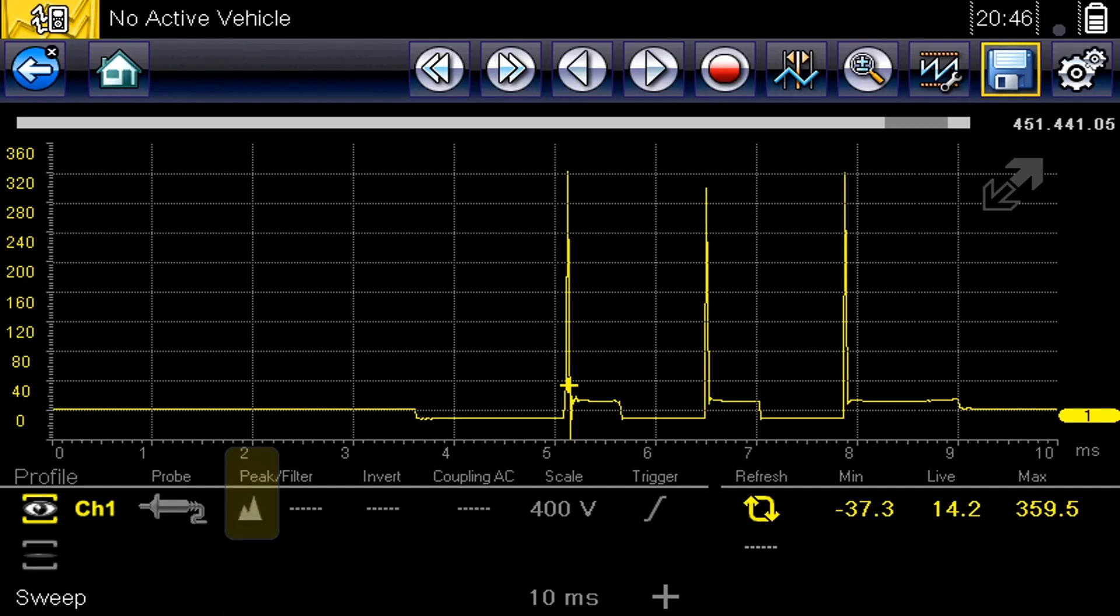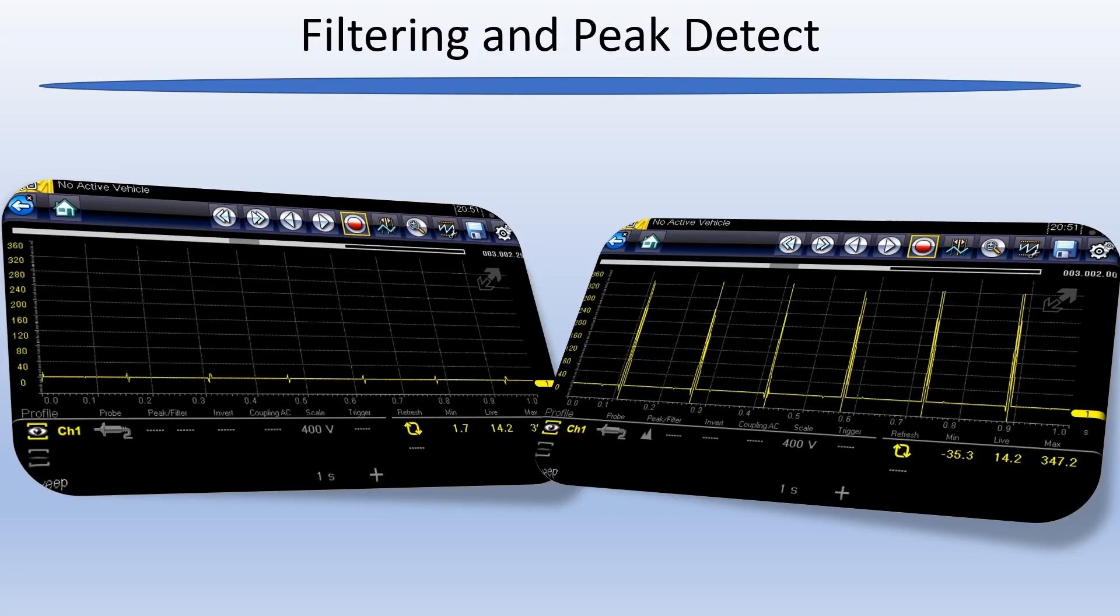Turn on peak detect here, right next to where you turn on filter. You'll want to use it anytime you think you might not be seeing the whole picture. It becomes more important as you put more and more time on the screen. Without peak detect turned on, and with a lot of time on the screen, you might miss out on many important details.